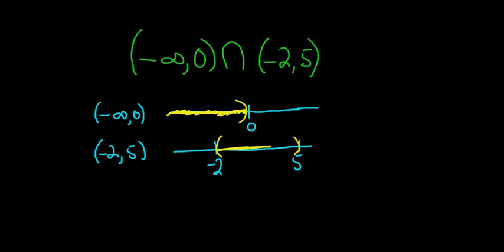It's everything in between these two numbers. That's the graph of the set negative 2 comma 5. Now we want the intersection. The intersection is what they have in common.